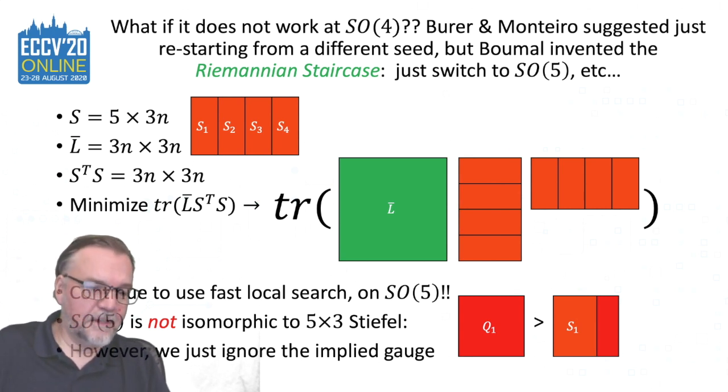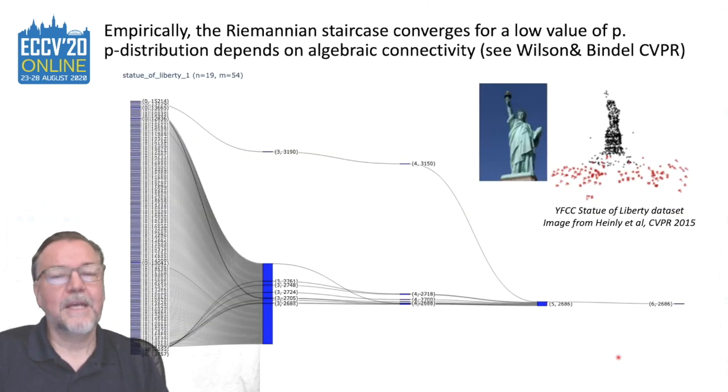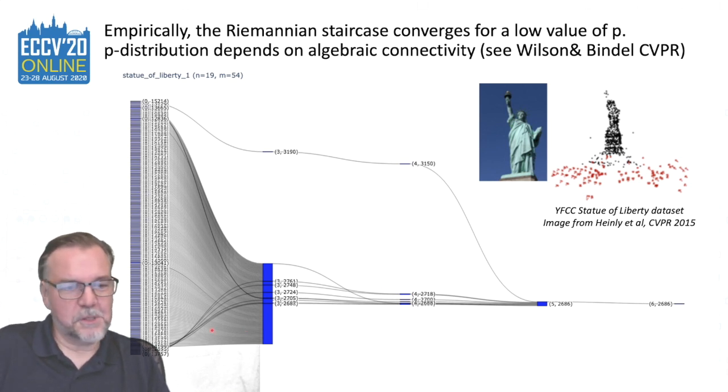Now, SO5 is a little bit more expensive than the 5x3 Stiefel manifold. It has now two extra columns that have some degrees of freedom, and they don't do anything, but we can just actually ignore them. So here is this shown again, but now on a real dataset. This is the difficult one from the YFCC. It's difficult in the sense that we have to optimize to high levels, but it's actually easy because it's a very, very small dataset, and it takes almost no time to optimize this, even at these higher levels.